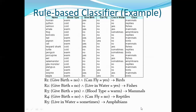Rule one says: give birth equals no and can fly equals yes → class is bird family. When both conditions are satisfied, the animal automatically belongs to the bird family. These rules can be applied to all records to predict classes.